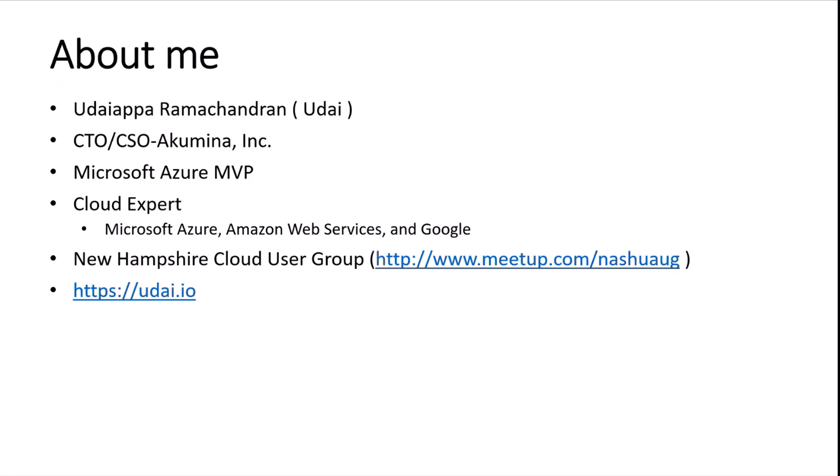Before I dive into the topic, a little bit about me. My full name is Uday Paramachandran — I go by Uday. I lead as a CTO and CSO at Acumula Inc. We built an employee experience platform that runs in Azure Cloud and uses the M365 suite for integration. I'm an Azure MVP for the last three years. I play in Azure, AWS, and Google Cloud, mostly Azure — built a SaaS platform in AWS as well. I run this user group, and that's my personal community profile site.